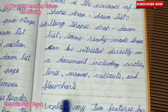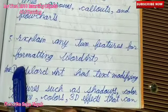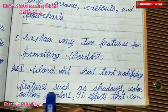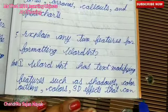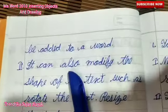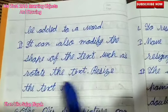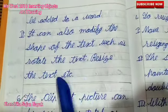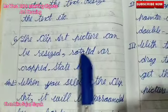Explain any two features for formatting WordArt. WordArt has text-modifying features such as shadows, outline colors, and 3D effects that can be added to a word. It can also modify the shapes of the text, such as rotate the text, resize the text, etc.